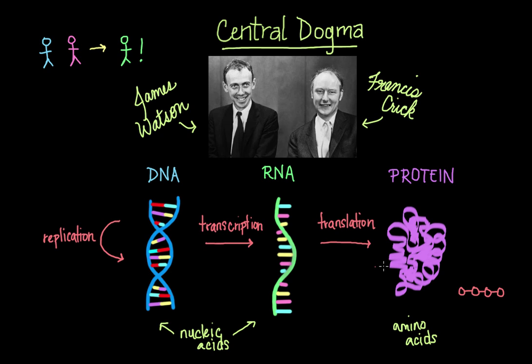It can sometimes be a little tricky to keep all of these terms straight, so let me break it down. For DNA, when DNA makes a copy of itself, it's called replication because DNA is just replicating itself — making the same copy. Transcription and translation, on the other hand, are easy to mix up. If you look at the word transcription, it has the word 'script' in it. I think of it as going from one written form to another written form, and both use nucleic acids — the same sort of alphabet, going from one kind of alphabet to the next.